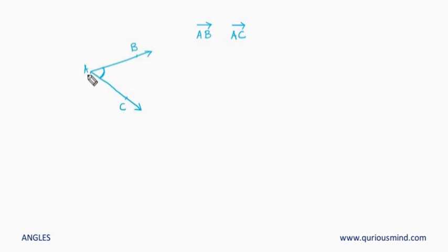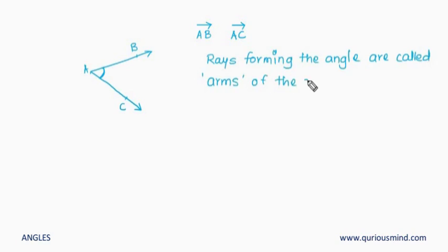Now these rays which form this angle, AB and AC, they are called arms of the angle. And the common start point of these rays is called vertex.